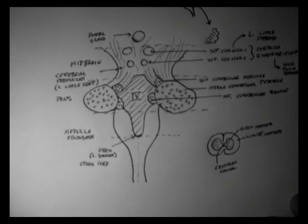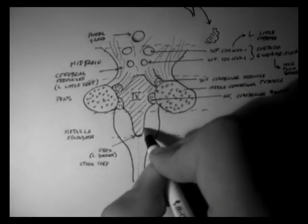The aqueduct of Sylvius brings the CSF into the fourth ventricle, but it's deep within the midbrain, so it can't be seen here.